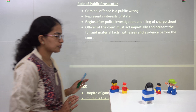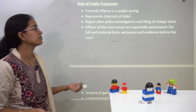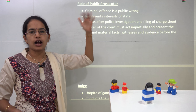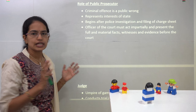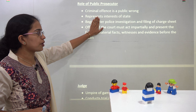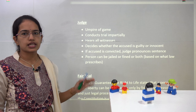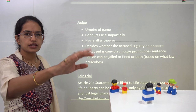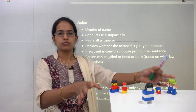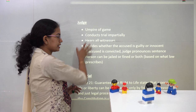What is the role of the public prosecutor? He is a law officer appointed by the government and works in the interest of the state. He begins his work after police interrogation is done and the charge sheet has been filed. The case is brought to court, where the judge acts as an impartial umpire. The judge hears all witnesses on both sides and gives a final judgment. Based on the judgment, the sentence is given — the person could be fined, jailed, or both.